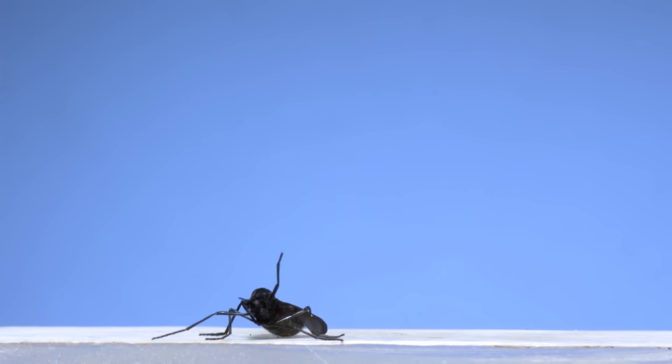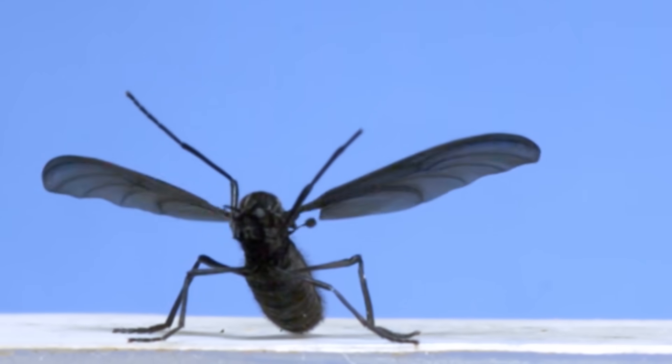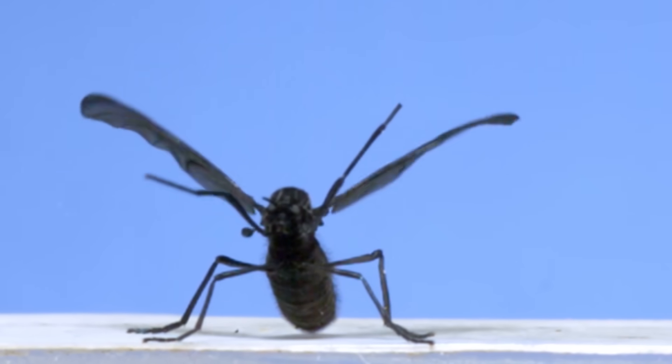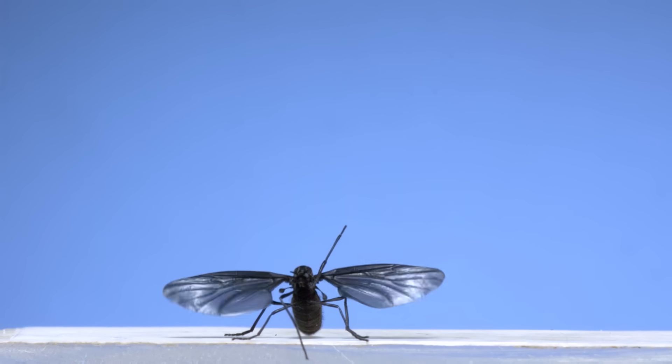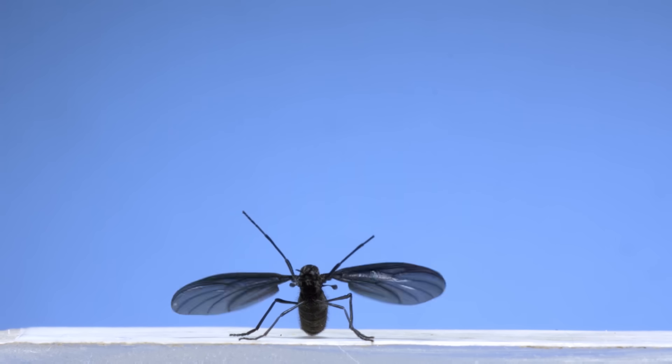Ok, now this is a fly. You can tell by the club-like structures beating up and down behind the front wing. Those are called haltiers, and are hind wings that have been modified into gyroscope-like sensory structures. This is something called a march fly, and its flight is way different from that of a stereotypical fly.